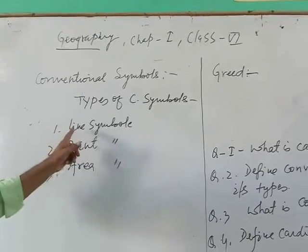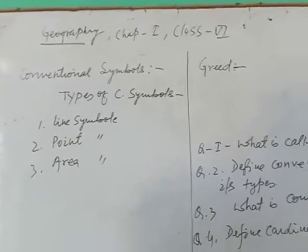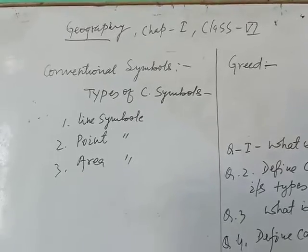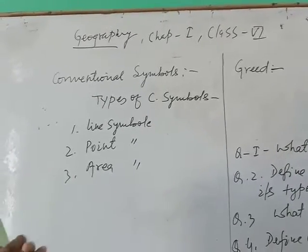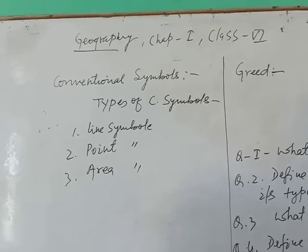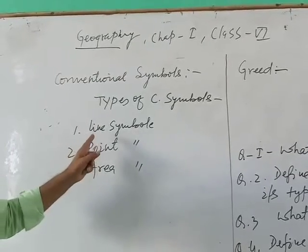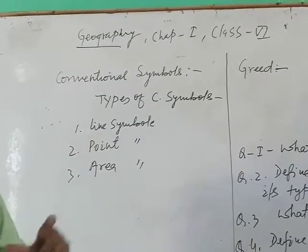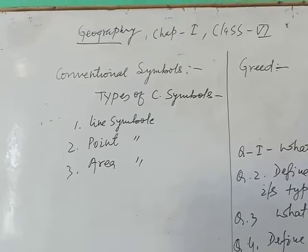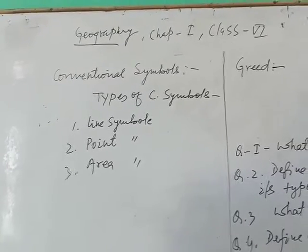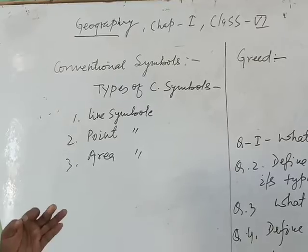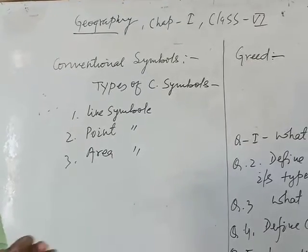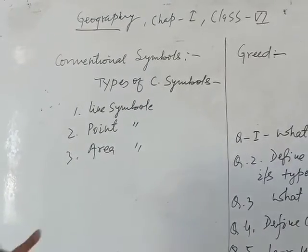The first line symbol. The man-made features like roadways, railway lines, footpaths, these are shown with the help of line symbols on the map. And with our knowledge, we understand which is the railway line, which is the national highways, which is the village routes, which are border routes, etc.